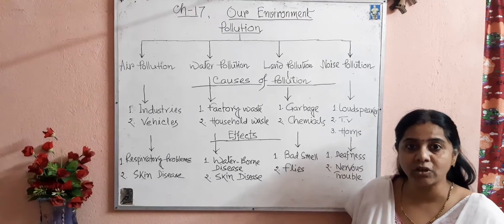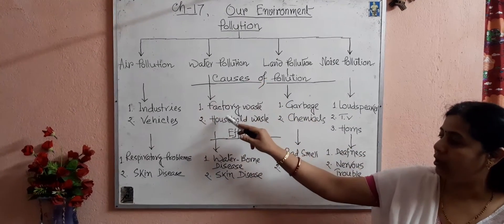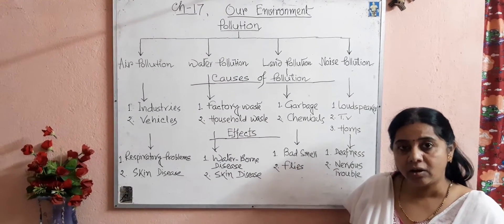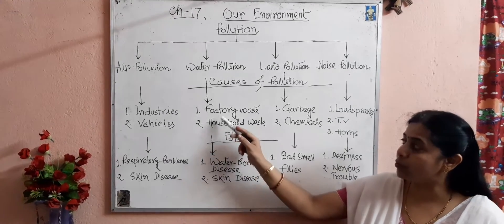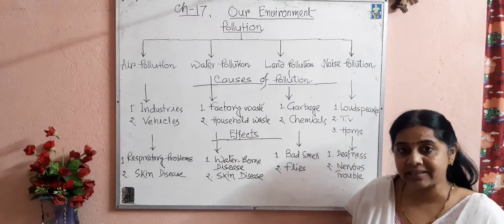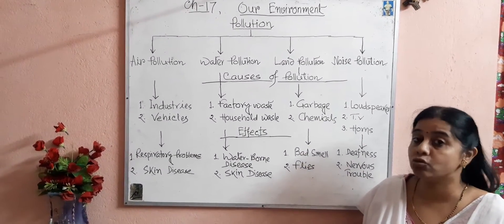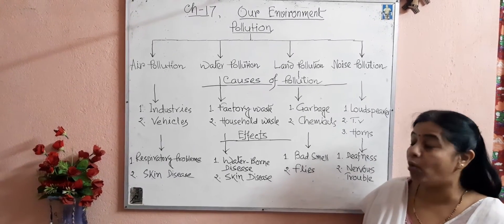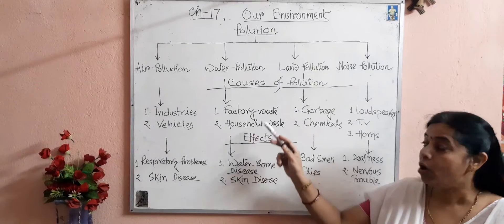Burning of garbage also pollutes the air. Next, the causes of water pollution: chemical wastes, oil spills, dirty water released from factories, and household waste pollute the water bodies. Humans do not use the water of ponds, rivers, and lakes wisely, and this leads to water pollution.